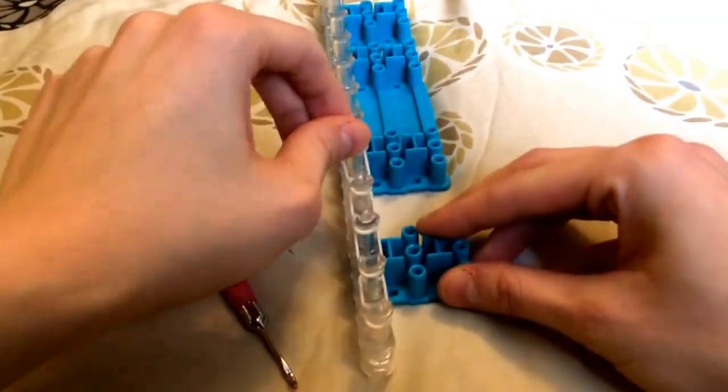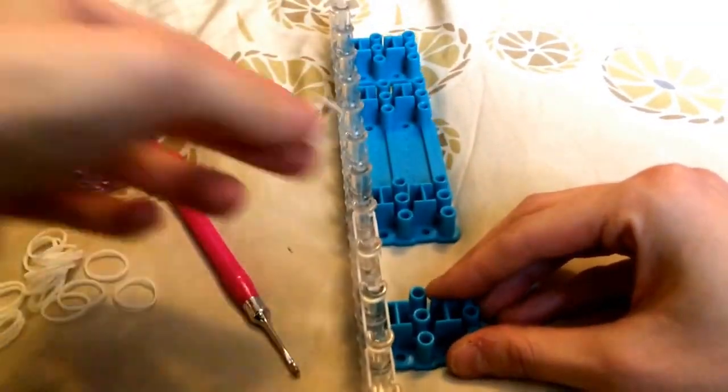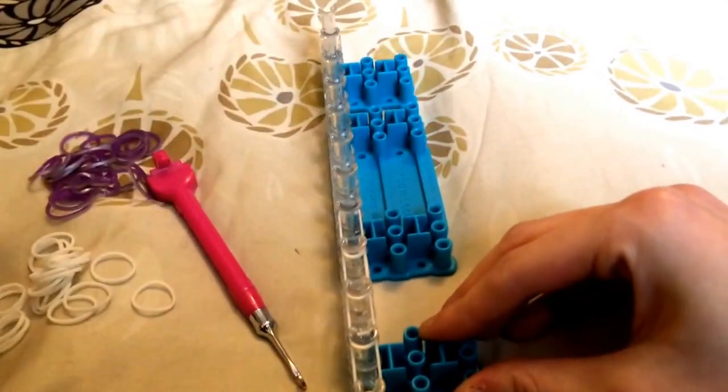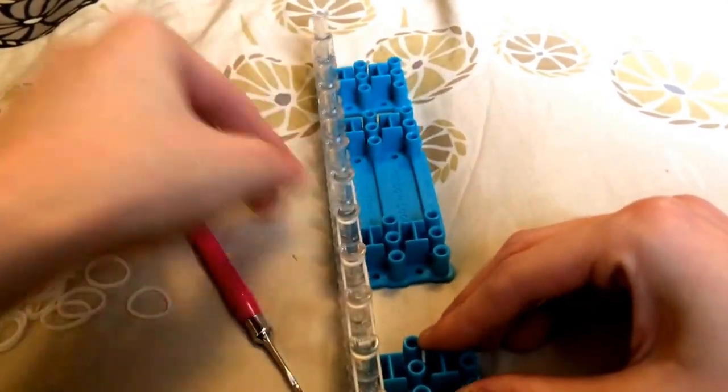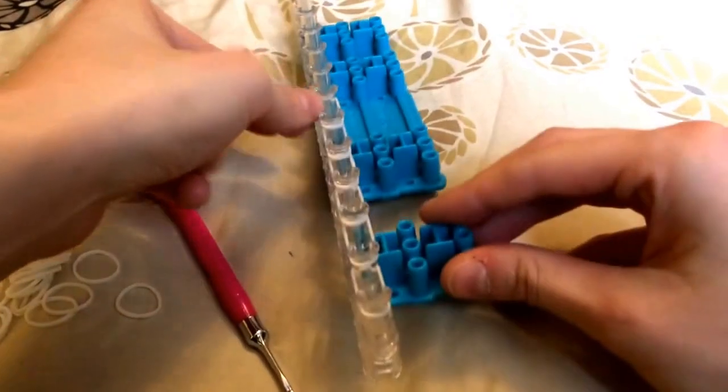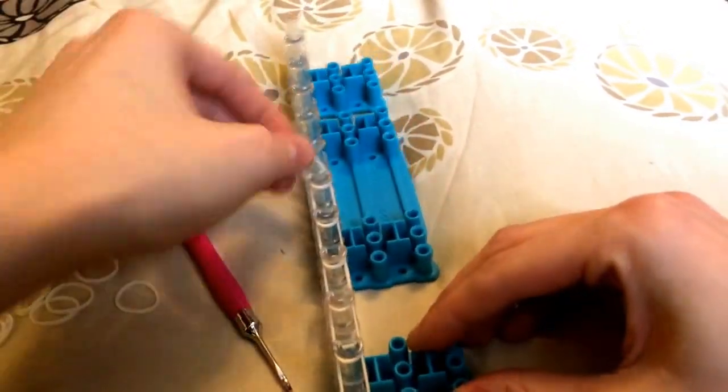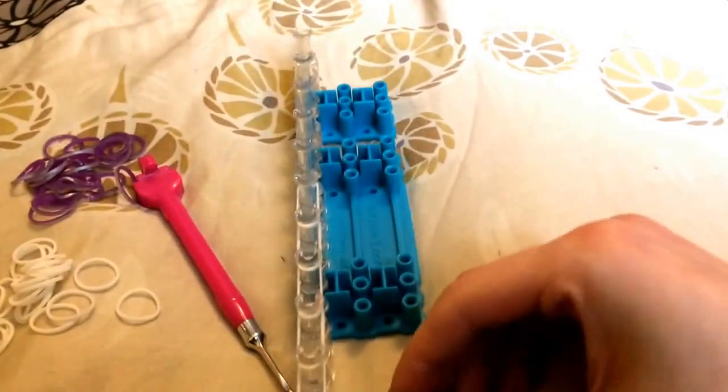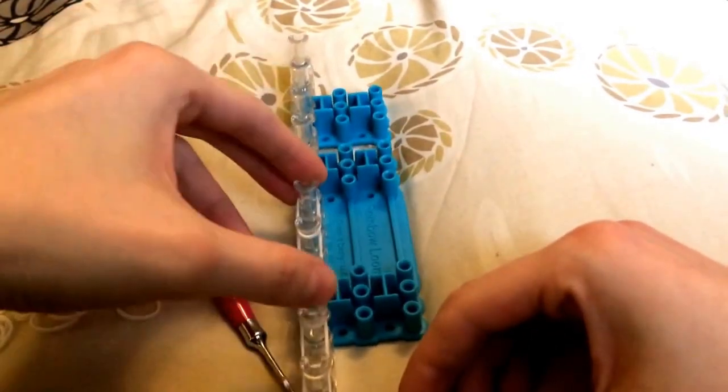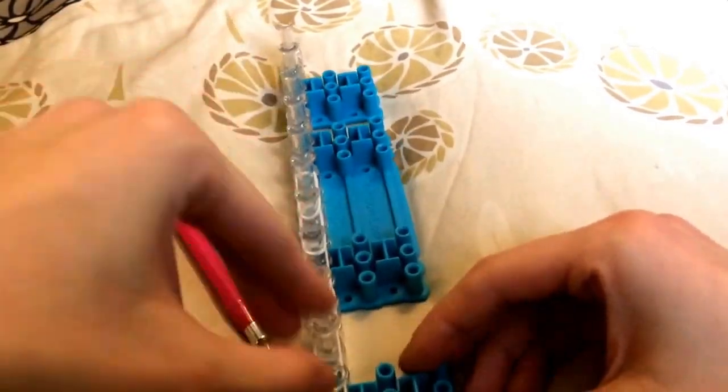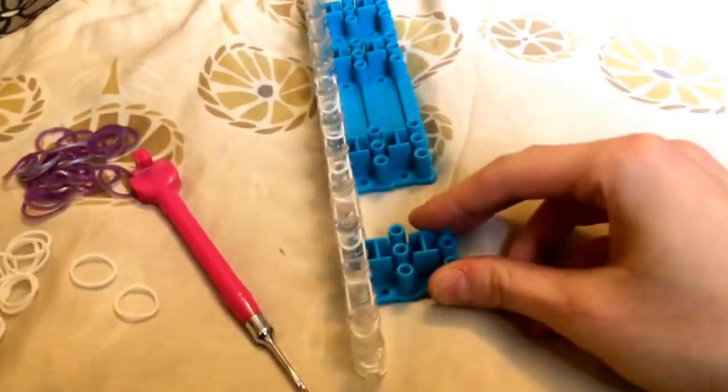So you're just going to make a single chain up your loom. I'm not going the full length because I don't think it's necessary to show you the whole thing. So that's probably good, I'm gonna stop there. Push all your bands down so you have some room, and then we're gonna start on the next step.